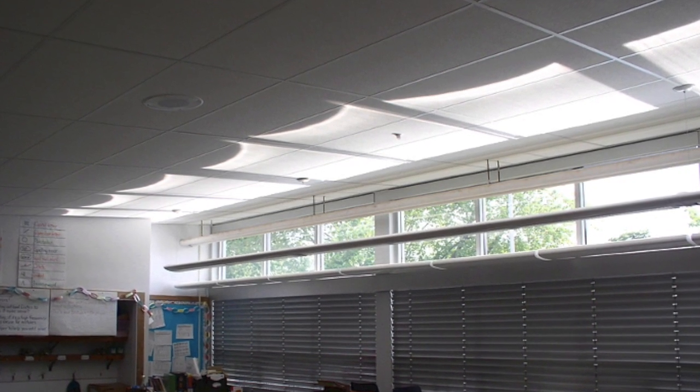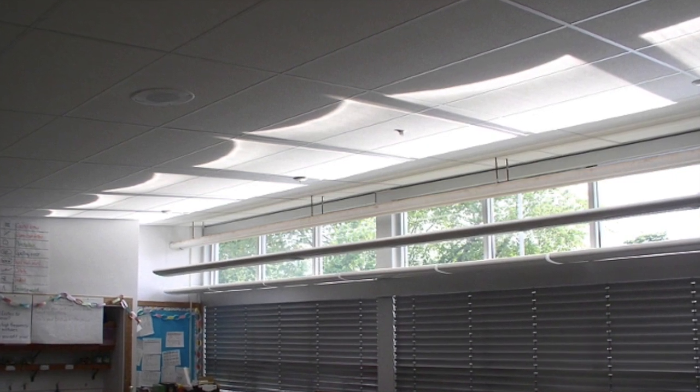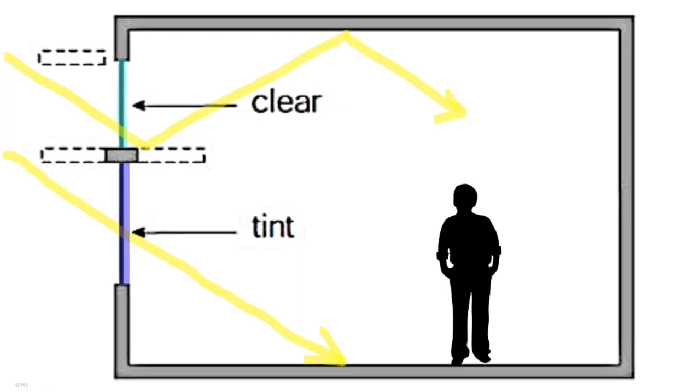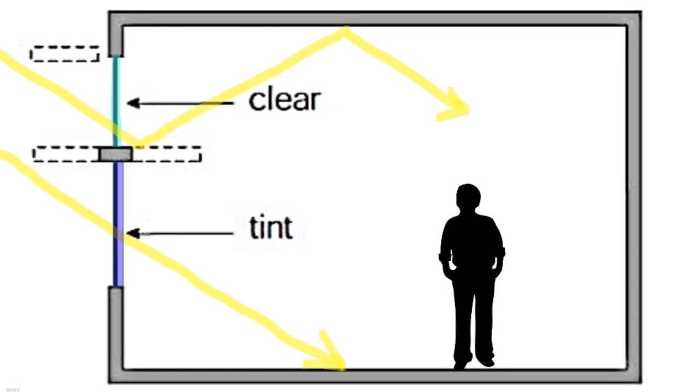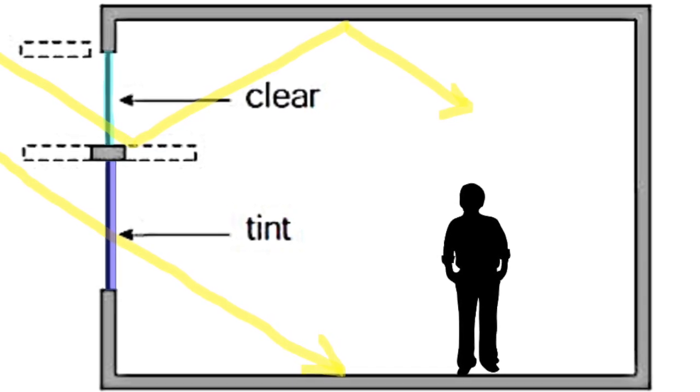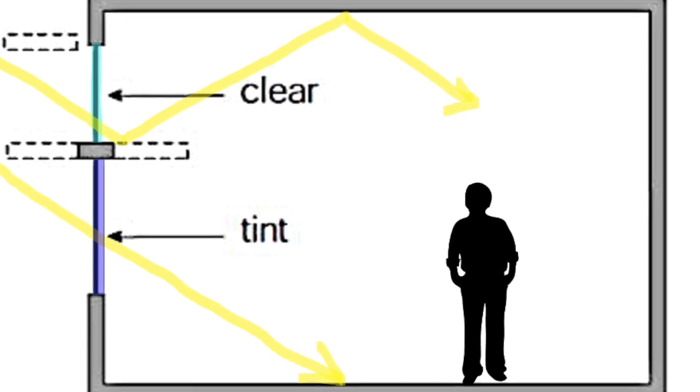This light shelf is to be best used on the building south side. Consider using clear glass above in the light shelf for high daylight admission and tinted glass below in the window for glare control.